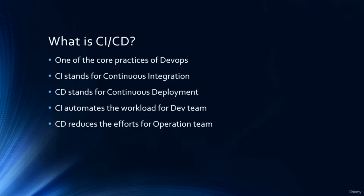CI-CD is one of the core practices of DevOps. CI stands for Continuous Integration, where it automates the workload for developers. If a developer makes any changes to their code base, then the CI server will build it, test it, and then merge it to our shared repo. This will not only make our workload more effective but also protect us from conflicts caused by different Git branches. CD refers to Continuous Deployment — it will deploy the tested code into the live production environment.